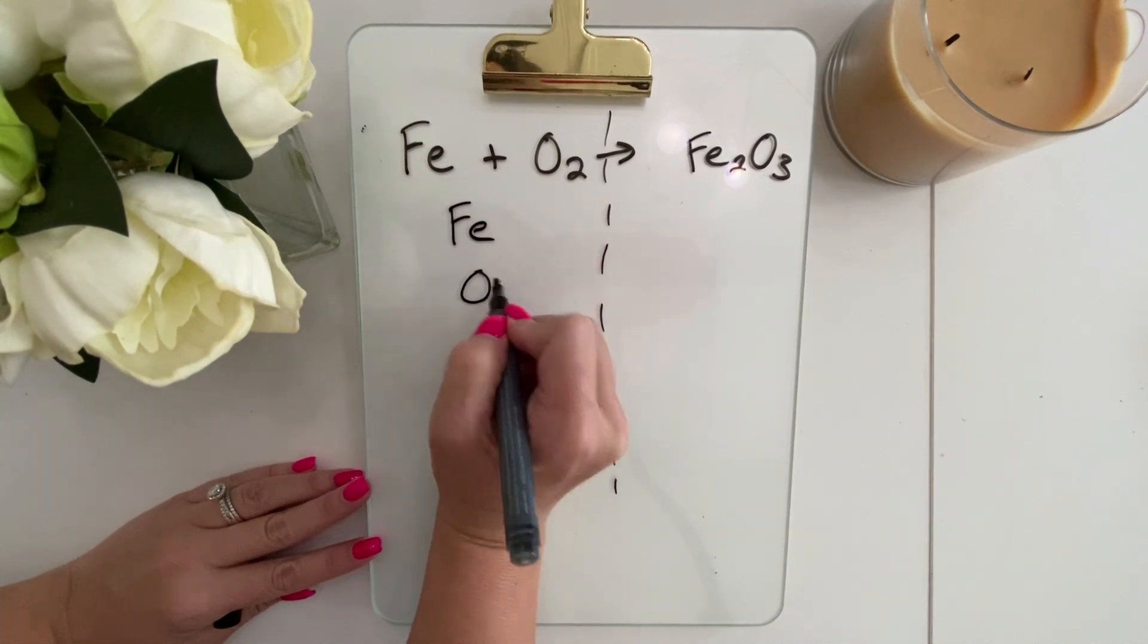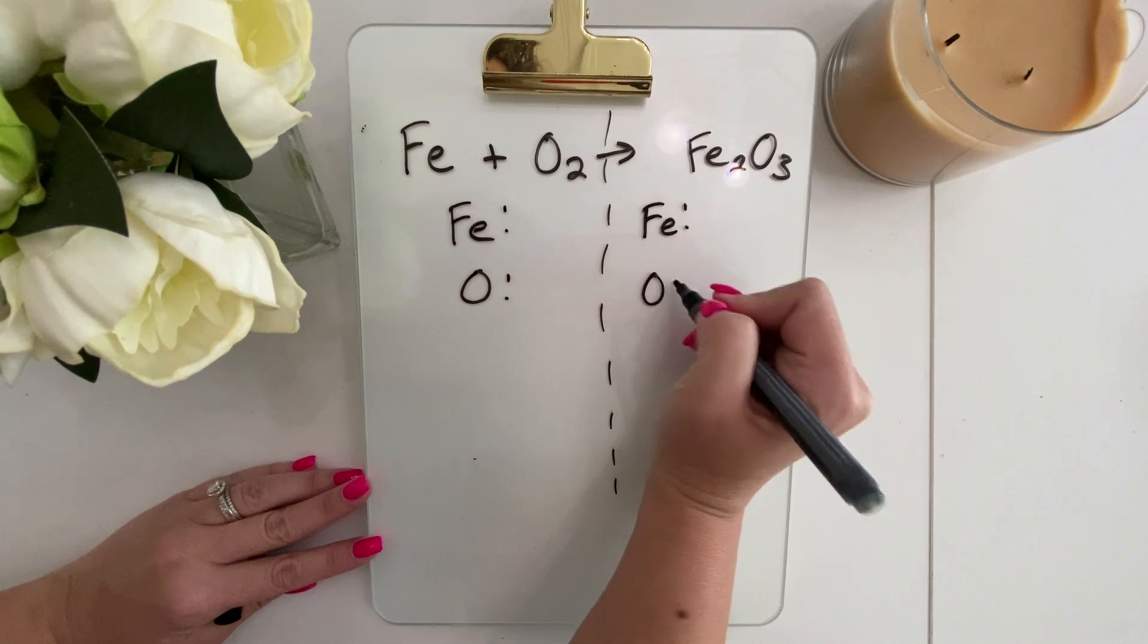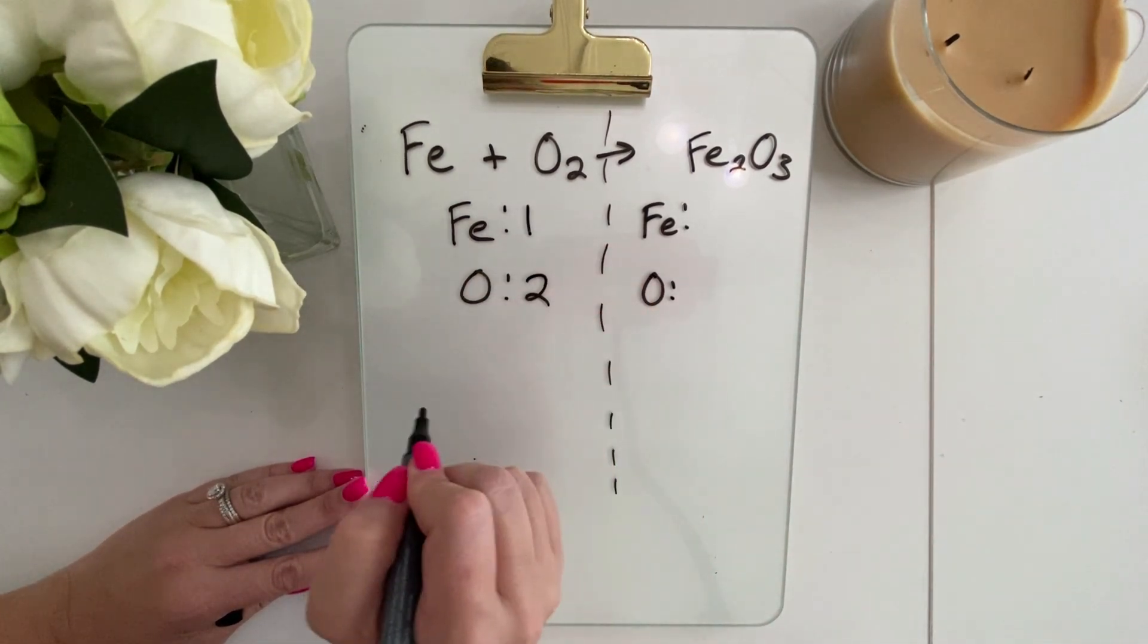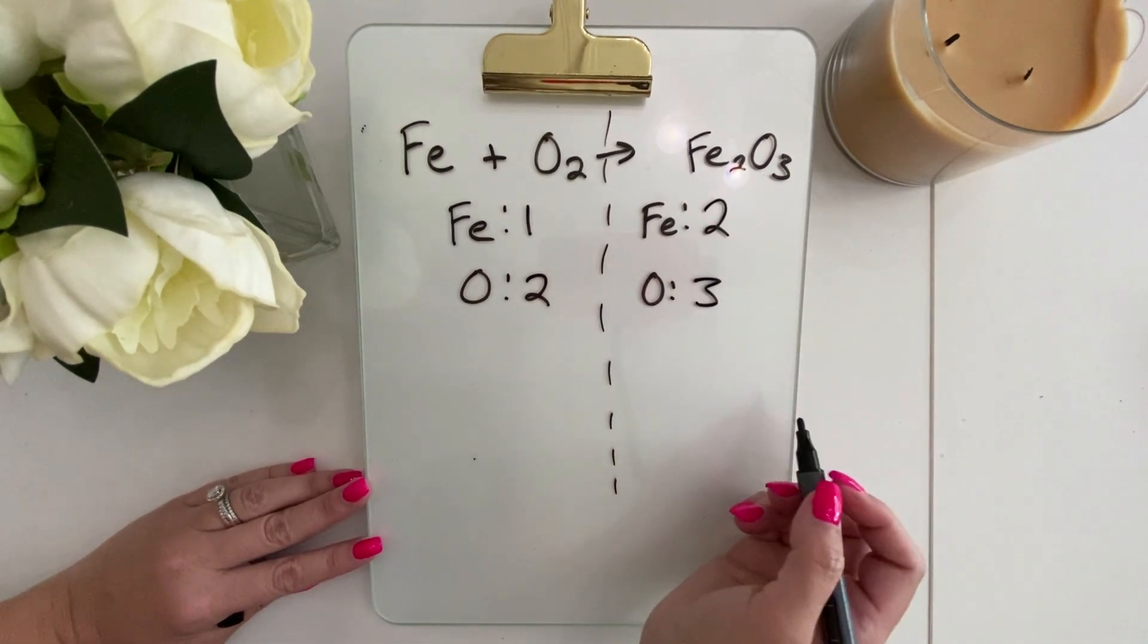We're going to separate our reactants from our products and list out all the elements we have on both sides. You can go ahead and count your atoms. We have one iron and two oxygen. On this side we have two iron and three oxygen.